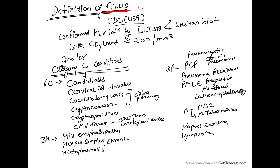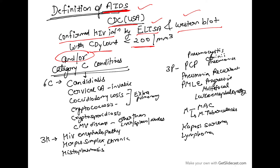As per the CDC USA definition, AIDS is defined as a confirmed HIV infection by ELISA and Western blot, with a CD4 count of less than 200, and/or the presence of Category C conditions.